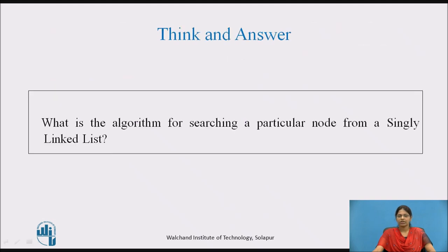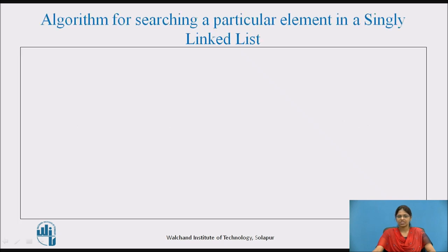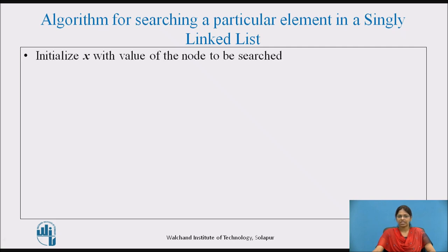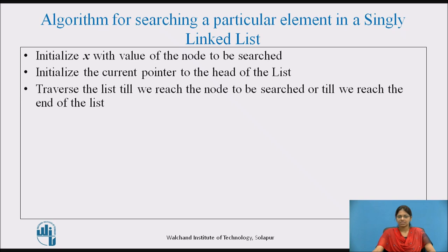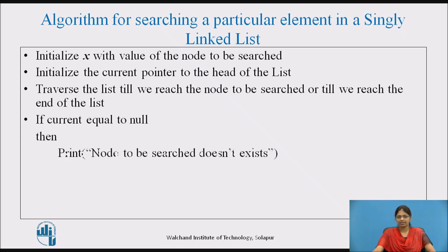Try to think of the algorithm for searching a particular node from a singly linked list. Pause the video and note your answer. The algorithm is: initialize x with the value of the node to be searched; initialize the current pointer to the head of the list; traverse the list till we reach the node to be searched or the end of the list. If current equals null, print that the node doesn't exist; else print that the node is found.